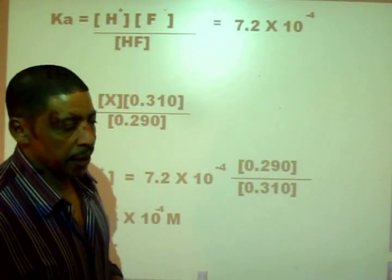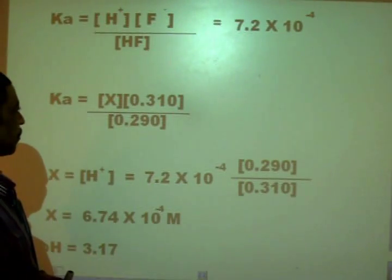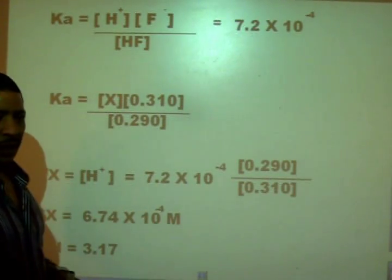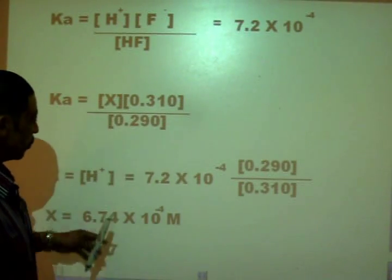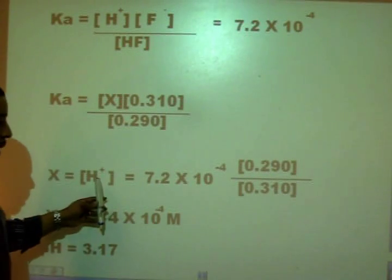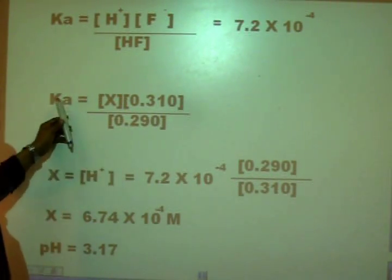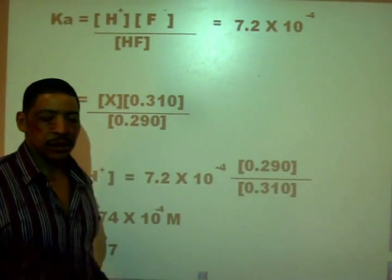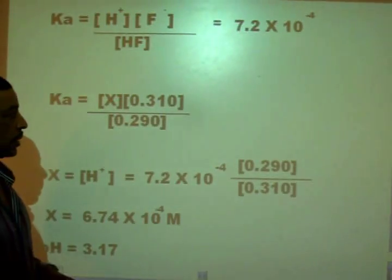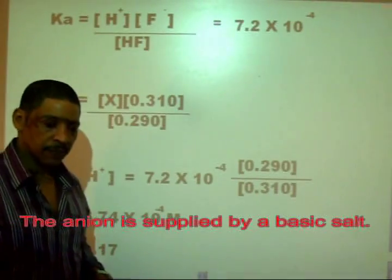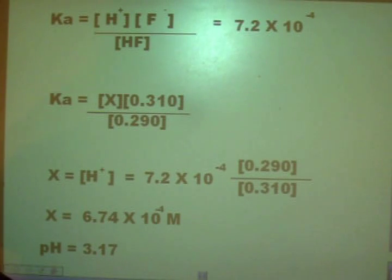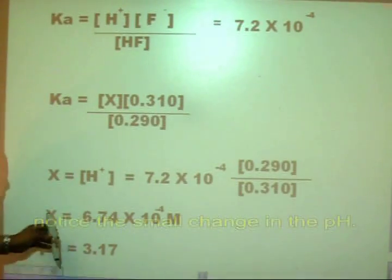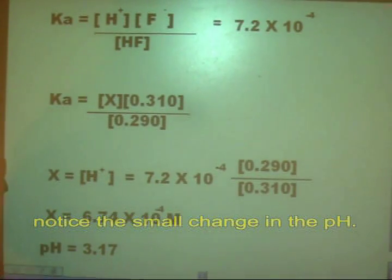We may now use our Ka expression to calculate our new pH, where Ka is equal to x times 0.31 divided by 0.29. Rearranging our expression to solve for x, we have x, which is the concentration of our hydrogen ion, equal to our Ka value, 7.2 times 10 to the minus 4, times the concentration of our acid, 0.29, divided by the concentration of our anion, 0.31. Solving for x, we have x equal to 6.74 times 10 to the minus 4, which represents our hydrogen ion concentration. Taking the negative log of this value, we have a new pH of 3.17.